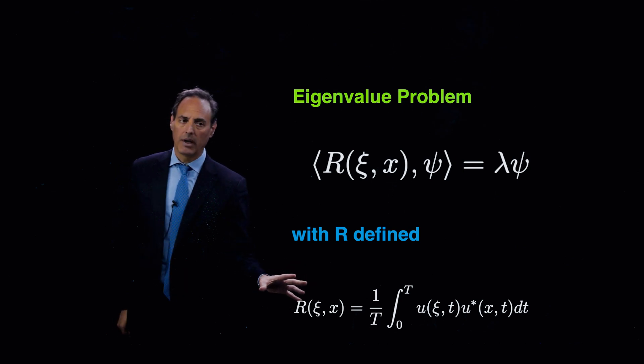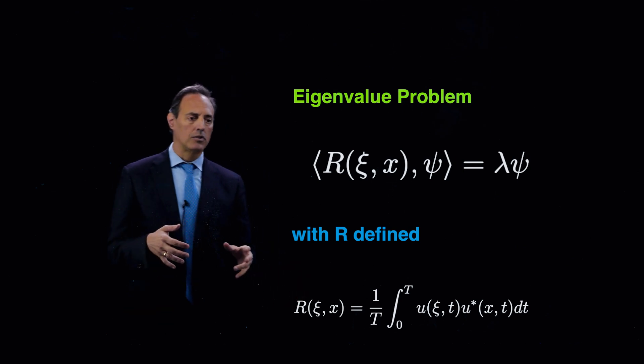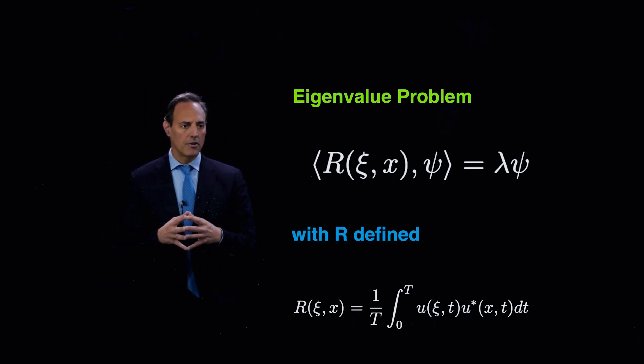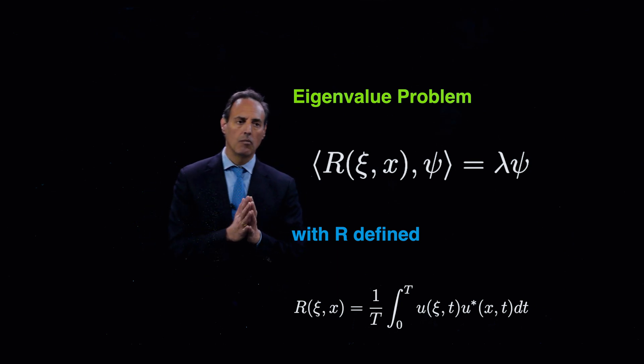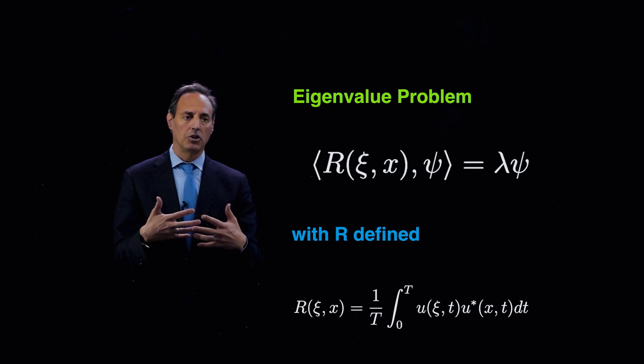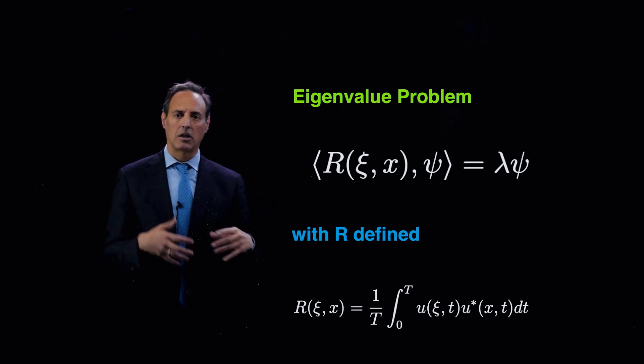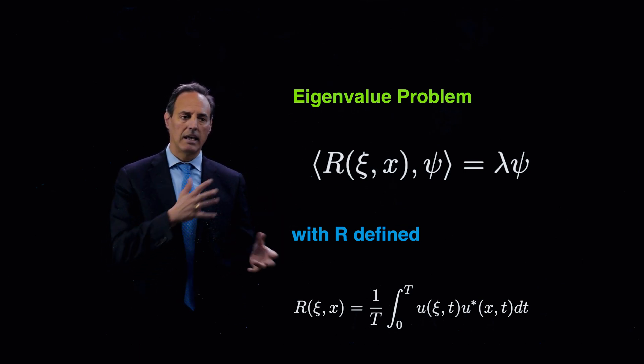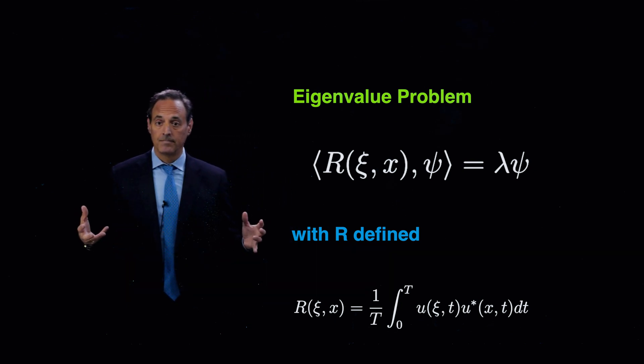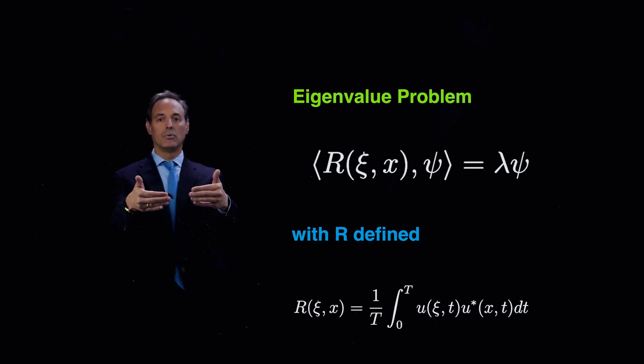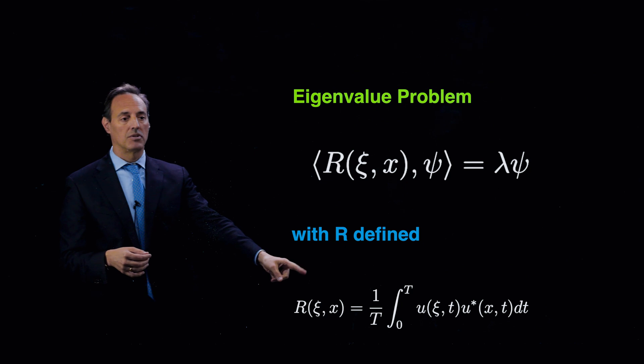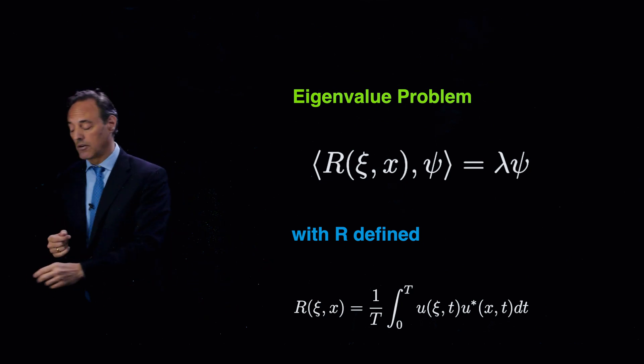If you look at some of the literature that's there, Lumley, Holmes, and others wrote a book on POD and the way they introduce this idea of POD and model reduction is in this context as a continuous variable. And they get to this point and then say, well, now I got to evaluate that integral. And that's when we make connection to the snapshot-based POD method. In particular, I've got to do this integral. So let's go talk about what doing that integral gives us.